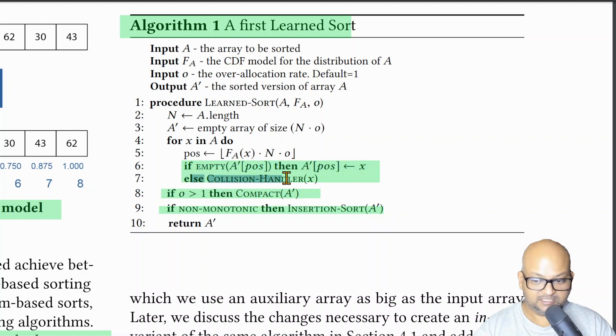So imagine for the moment that we store it somewhere else if there's a collision, and finally we then compact this array taking out all the empty spaces. And then if we have any sorting errors, if the output array is non-monotonic, then we do a quick insertion sort to finally sort the output array. Note that we expect this final insertion sort to be pretty fast because the array is almost sorted in some sense.